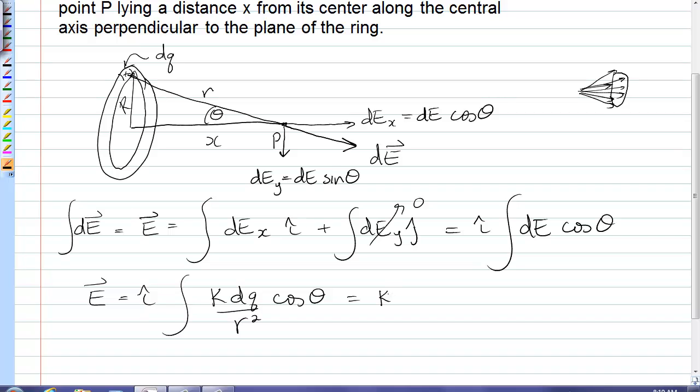So r, little r, as I move around that ring remains constant, so I can pull that out of the integral. Theta, as I move around the ring, also remains constant because I'm just rotating about that x-axis. And so cos theta can come out of the integral. And so I'm left with the integral of dq.